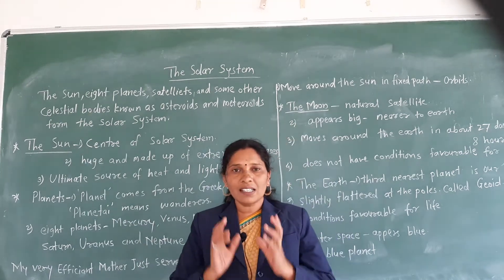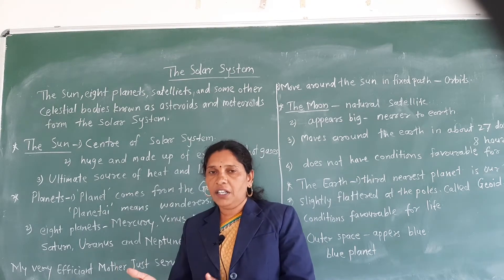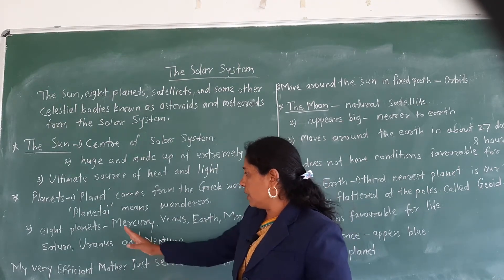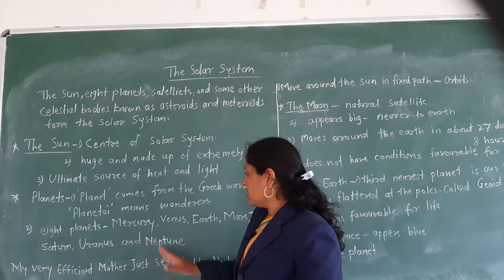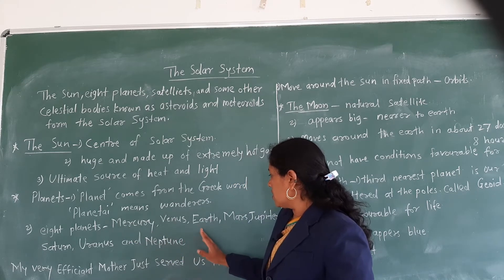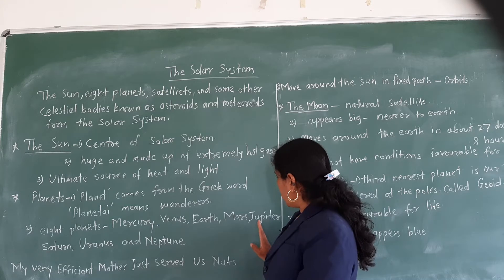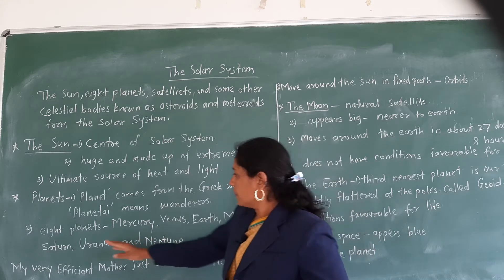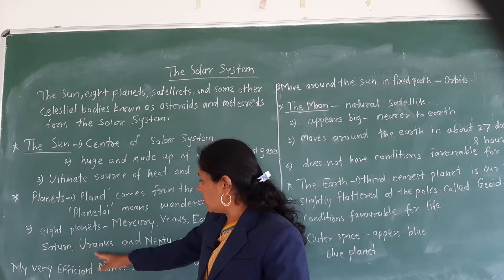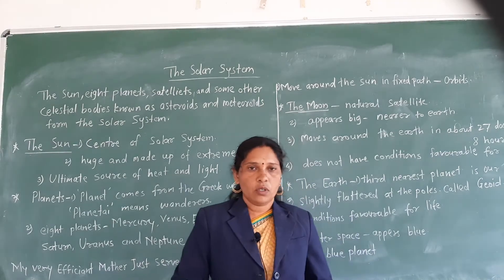In our solar system there are 8 planets. According to their distance from the sun: 1st is Mercury, 2nd is Venus, 3rd is Earth, 4th is Mars, 5th is Jupiter, 6th is Saturn, 7th is Uranus, and 8th is Neptune.